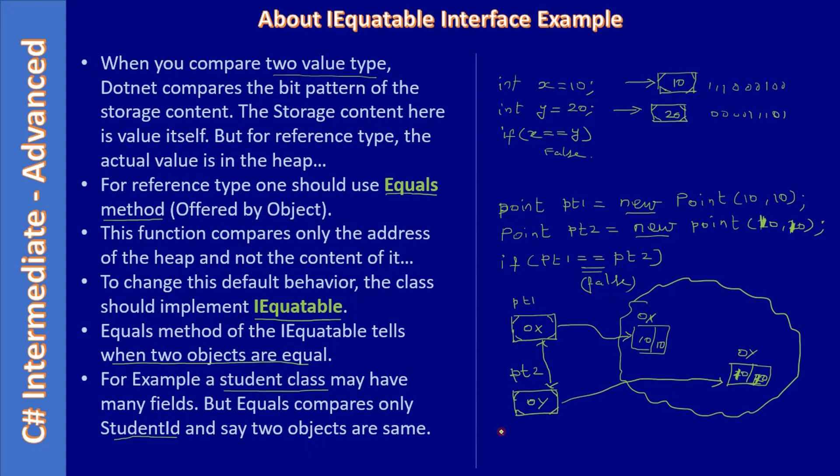So Student 1 has an ID and name X. Student 2 has a different ID but still holds the same name. In that case, we will be comparing only the ID. If the ID differs, we say even though the name is the same, these two students are different. They share the same name, but their IDs are different.